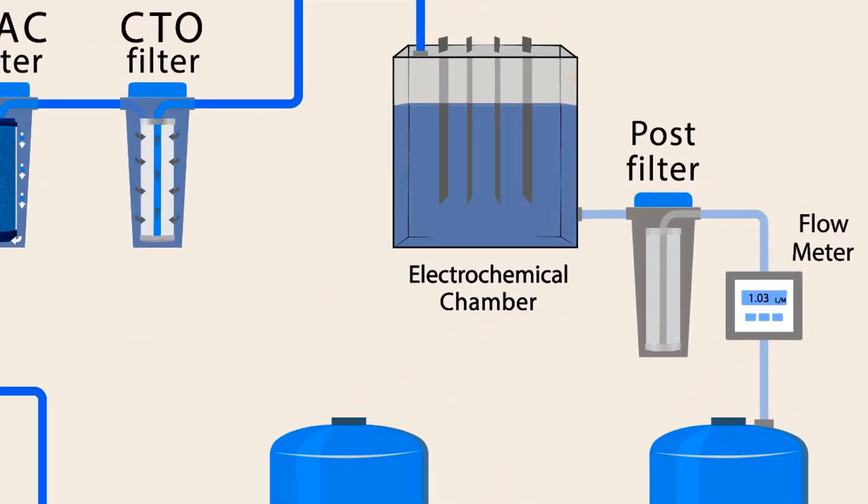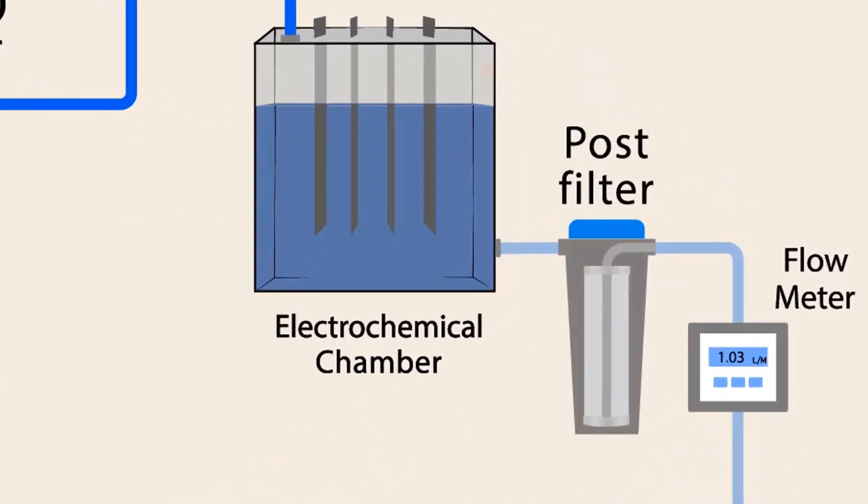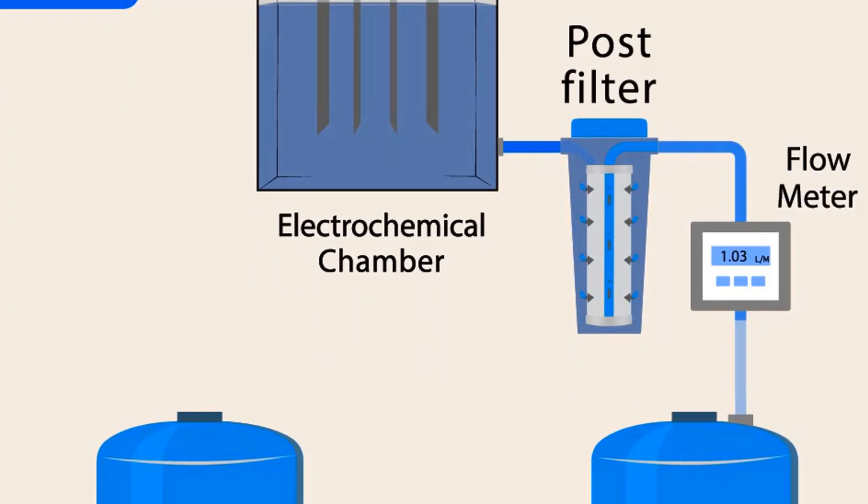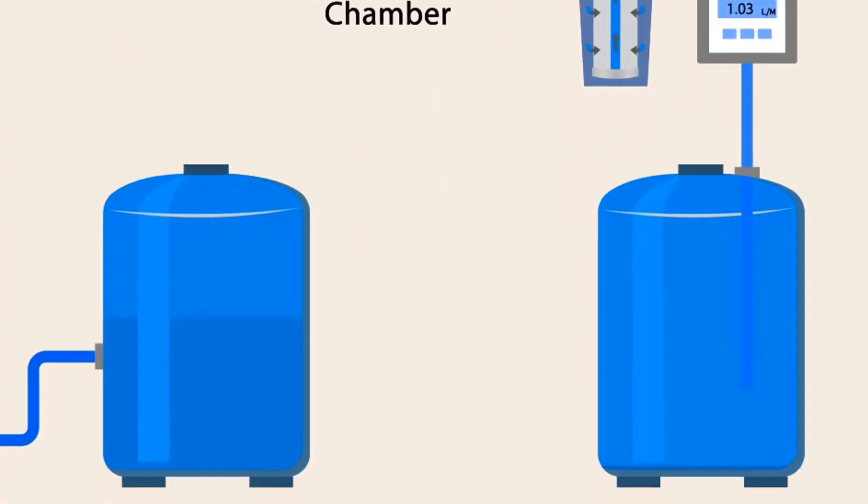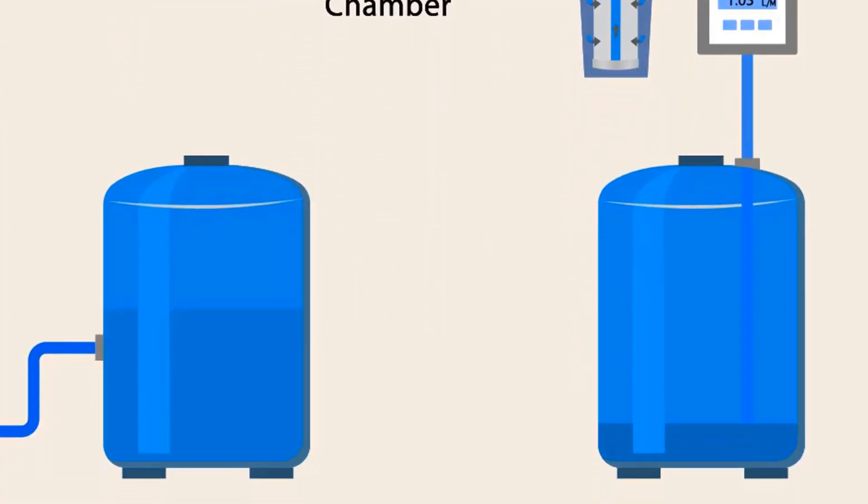Now, it's time to remove the killed germs and bacteria from the water. For that purpose, we have post-filter stage. So, water goes to the post-filter. It will remove the germs and pass the drinkable water. This clean water can be stored in a tank. That's all about this water purification plant.